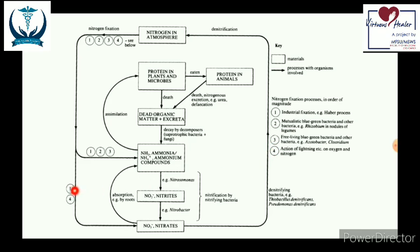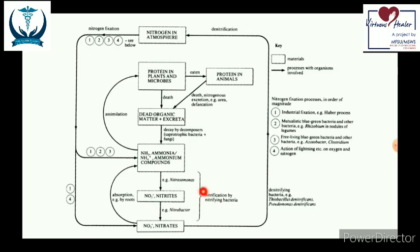Ammonia or ammonium compounds are converted to nitrite by Nitrosomonas bacteria, and nitrite is converted to nitrate by Nitrobacter. This process of converting ammonia to nitrate through nitrite is called nitrification. Denitrification, which returns nitrate to atmospheric nitrogen, is carried out by Thiobacillus denitrificans and Pseudomonas denitrificans.